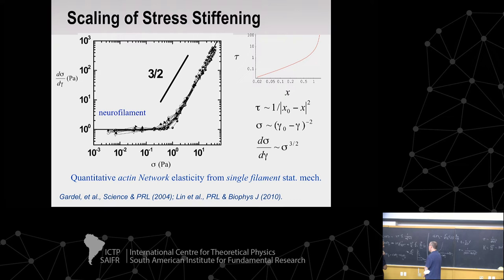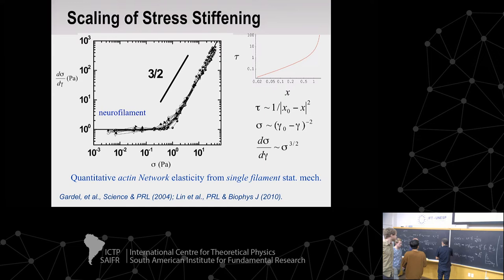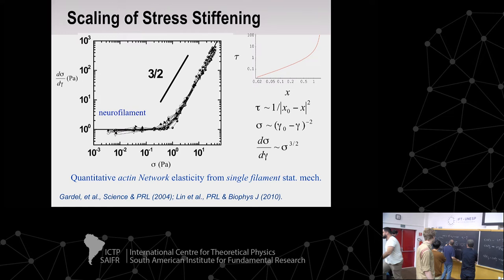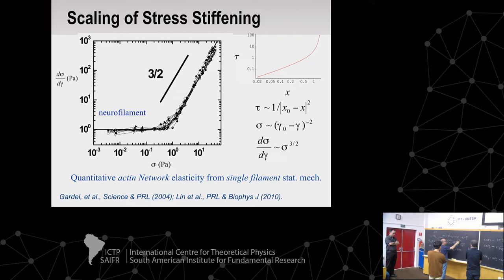Regarding lateral versus stretching fluctuations: fundamentally, the contraction is all coming from the lateral fluctuations. You can do this all dynamically: the dynamical version is u_q(t) u_q(0)* times e to the minus t over a Q-dependent relaxation rate, with the inverse relaxation rate tau_Q going like Q to the four — a very strongly Q-dependent dynamics.